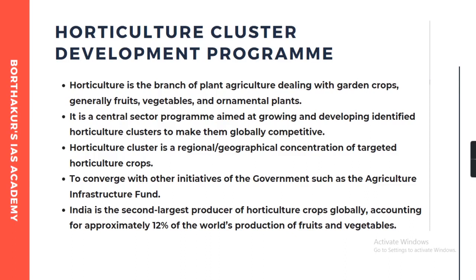If we look at the horticulture sector of our country, India is the second largest producer of horticulture crops globally and is a leading country in producing fruits like mango, banana, pomegranate, acid lime, etc. In the year 2018-19, Andhra Pradesh followed by Maharashtra and UP were the top fruit producing states, and West Bengal, Uttar Pradesh and Madhya Pradesh were the top states in vegetable production.